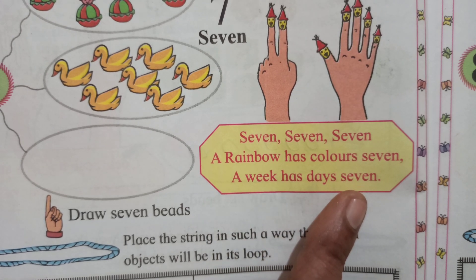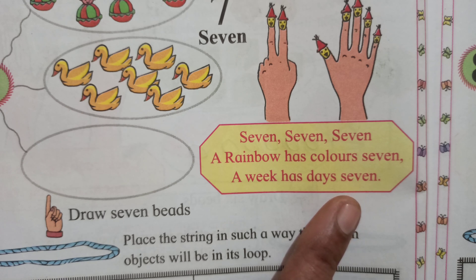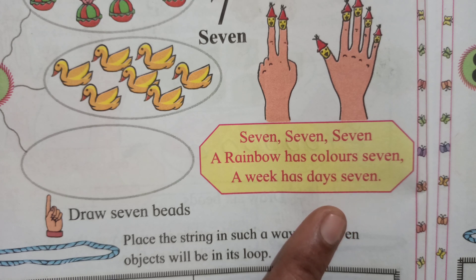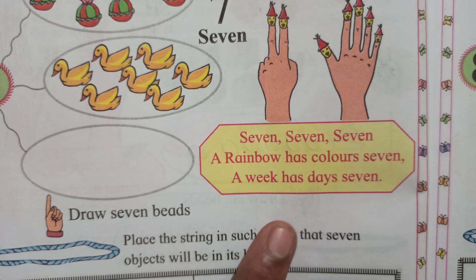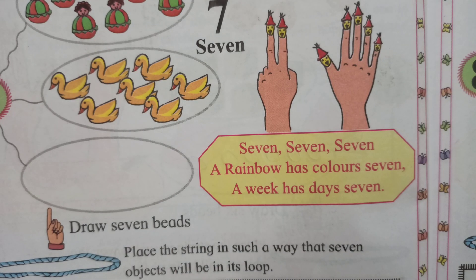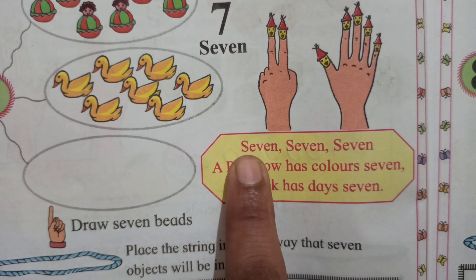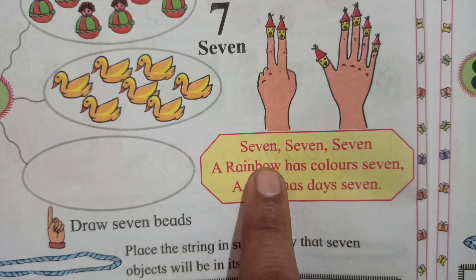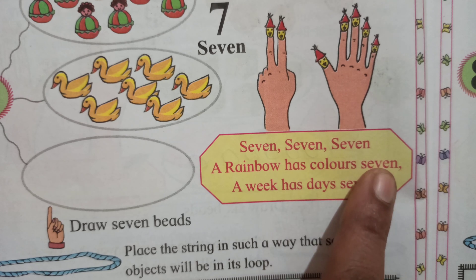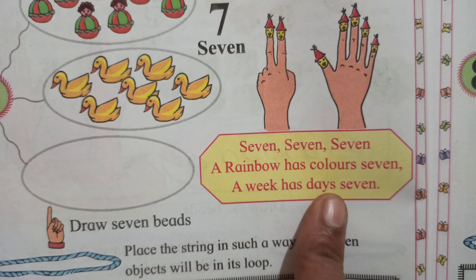Yes, my dearly friends. In months and seasons you can see a rainbow. How many colors are there in a rainbow? Seven. And how many days are in a week? A week also has 7 days. A rainbow has 7 colors. A week has 7 days.